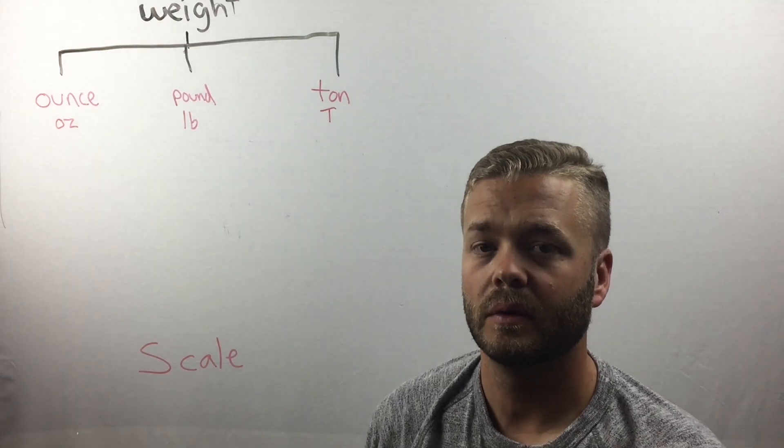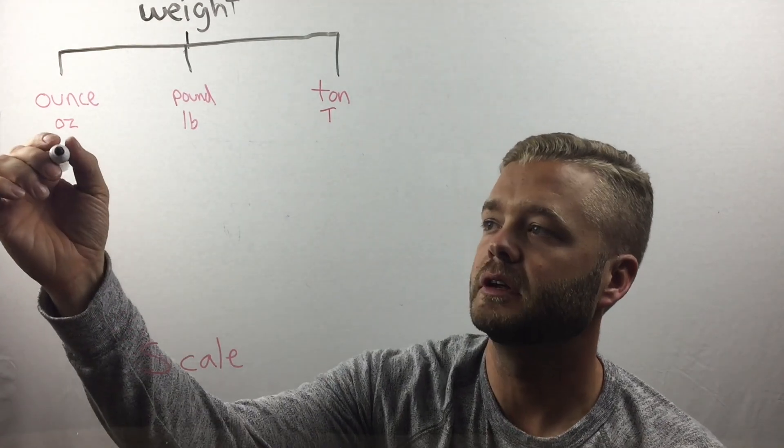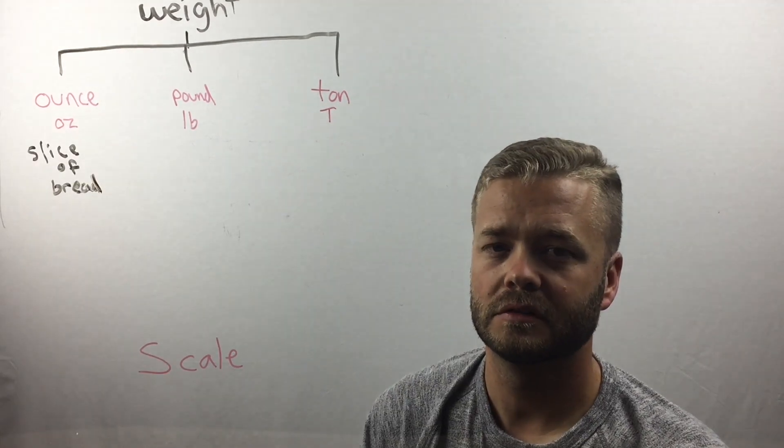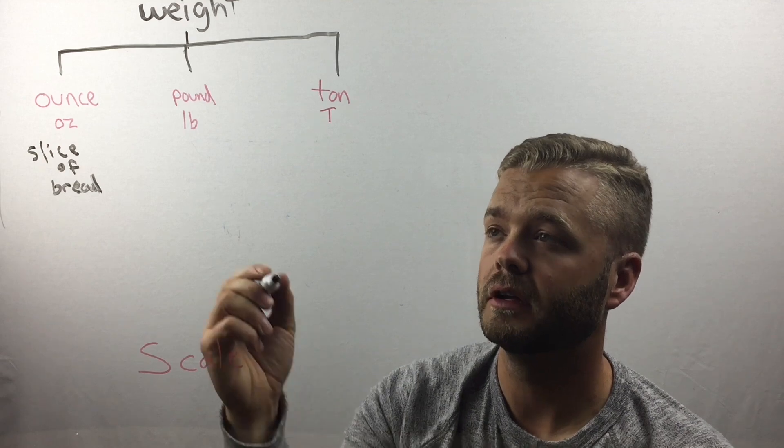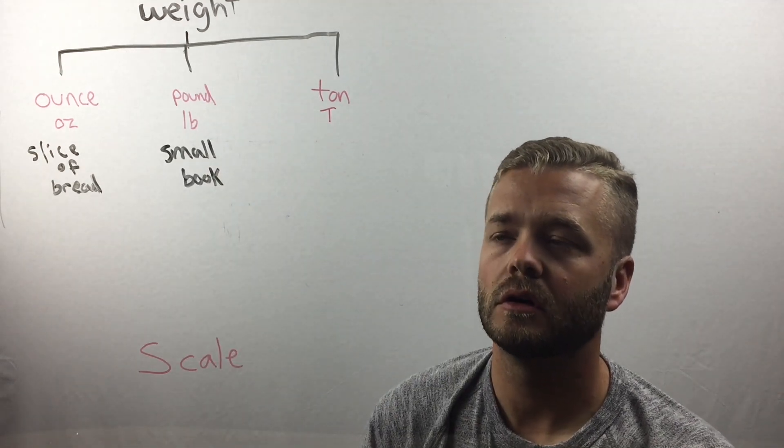An example of something that weighs one ounce is a slice of bread. An example of something that weighs one pound would be a small book or a loaf of bread. An example of something that weighs a ton is a small car.